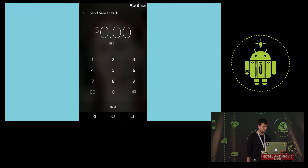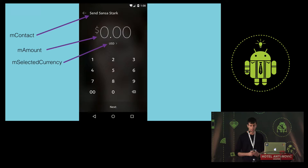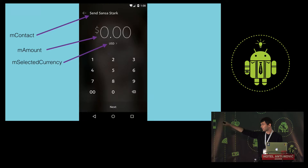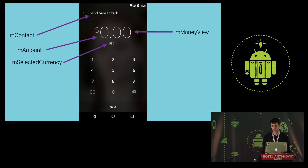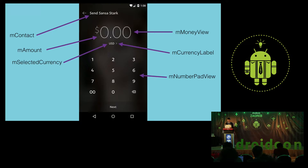Let's take the amount fragment as an example. We have what I'd like to call fragment state — data that is passed into our fragments or that the user modifies: for example, the contact selected earlier (used to show its name in the toolbar), the amount the user inputs, and the currency. On the other hand, we have view state: references to child views for easier access, click listeners, gesture detectors, animators, drawables, and so on.